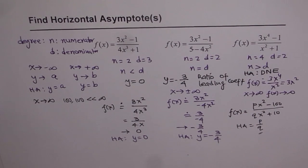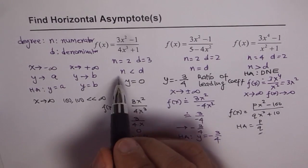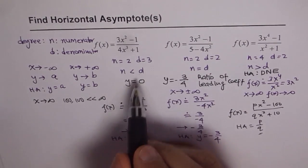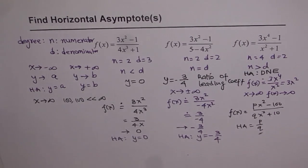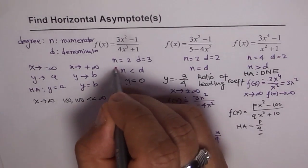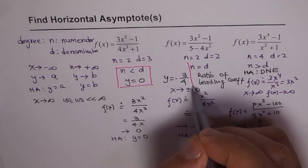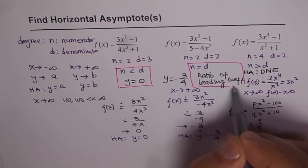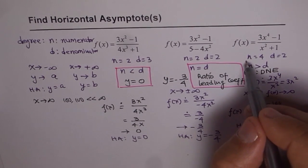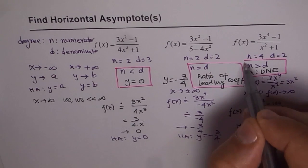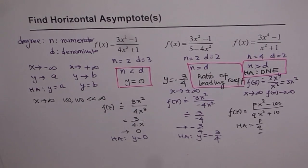So to summarize our conclusions: if the degree of the numerator is less than the denominator, the horizontal asymptote is y equals 0. If the degrees are equal, it is the ratio of leading coefficients. And if the degree of the numerator is higher, the horizontal asymptote does not exist. This is a universal law which will always apply.